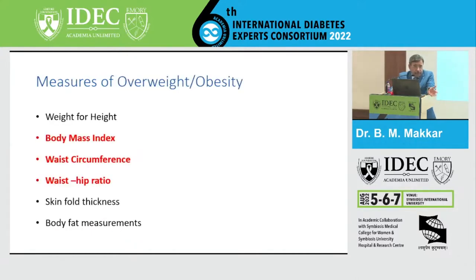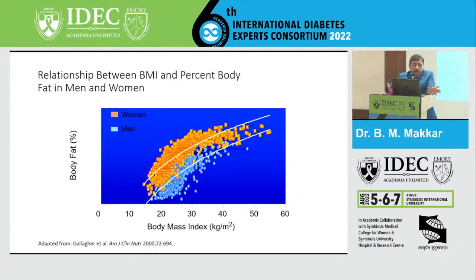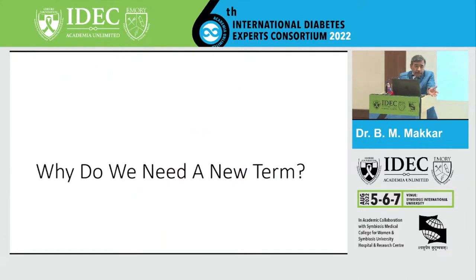The commonly used parameters are body mass index, waist circumference, and waist-hip ratio. Waist circumference and waist-hip ratio are defining cutoffs for central obesity. There are studies which have clearly shown a strong correlation between body mass index and total body percent fat, both in men and women. Then why can't we use body mass index as a parameter or definition for obesity, and why do we need a new term?